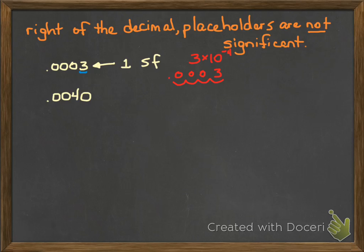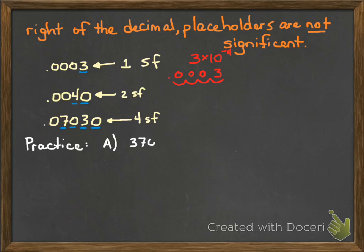Let's take a look at 0.0040. That's actually got two sig figs. Of course the four, since it's non-zero, is significant. And the zero after it, because it's trailing the four, is significant. The other two are just placeholders. Let's take 0.07030. That's got four sig figs. The seven and the three are significant. The zero is significant because it's bracketed by the sig figs — the seven and the three. And then that trailing zero is significant.